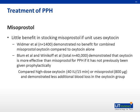Let's talk about misoprostol. There is little benefit in stocking misoprostol if the unit uses oxytocin. A paper by Whitmer et al. shows that there is no benefit for combined misoprostol-oxytocin compared to oxytocin alone. Another paper demonstrates that oxytocin is more effective than misoprostol for PPH if the patient has not been given oxytocin prophylactically. Compared to high-dose oxytocin or misoprostol, there is less additional blood loss in the oxytocin group, showing that oxytocin is a better choice in treatment of PPH.